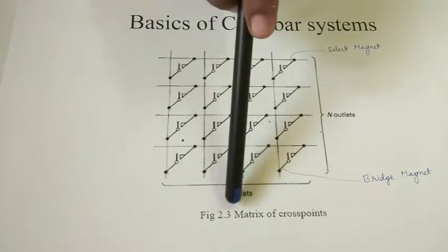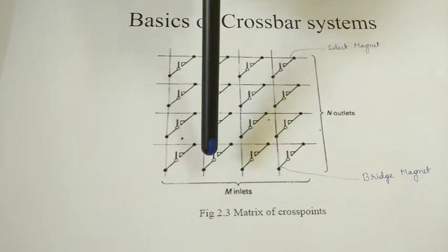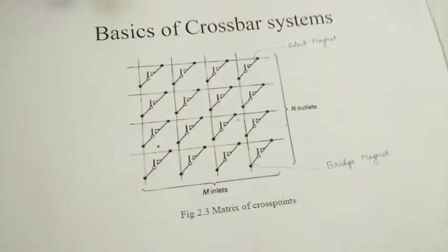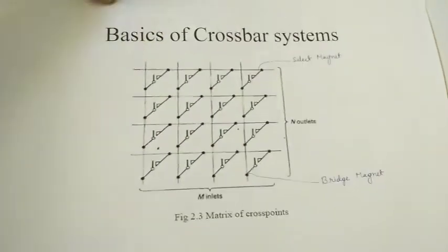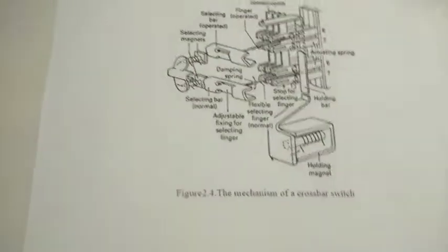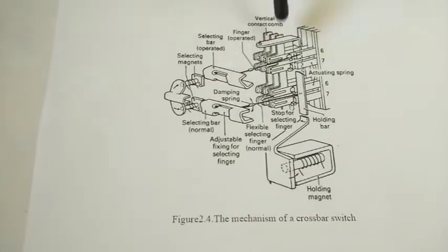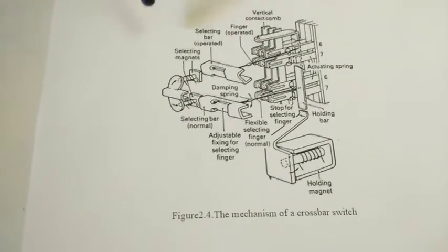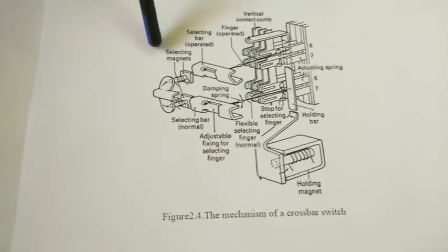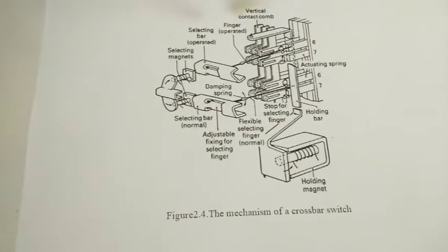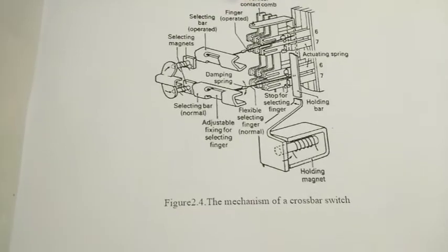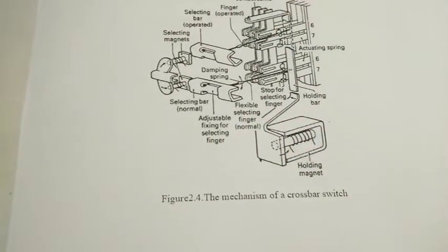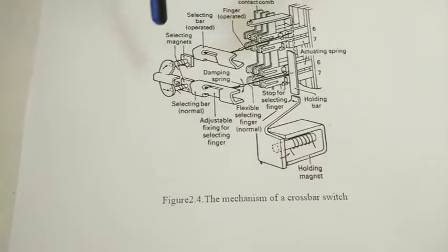These types of connections are an economic way of connecting customers, so they are used. This point is actually called the matrix of crossbar system. This also shows the 3D view of a crossbar system, where you can see the select magnet and how the mechanism works, as shown in the 3D diagram.